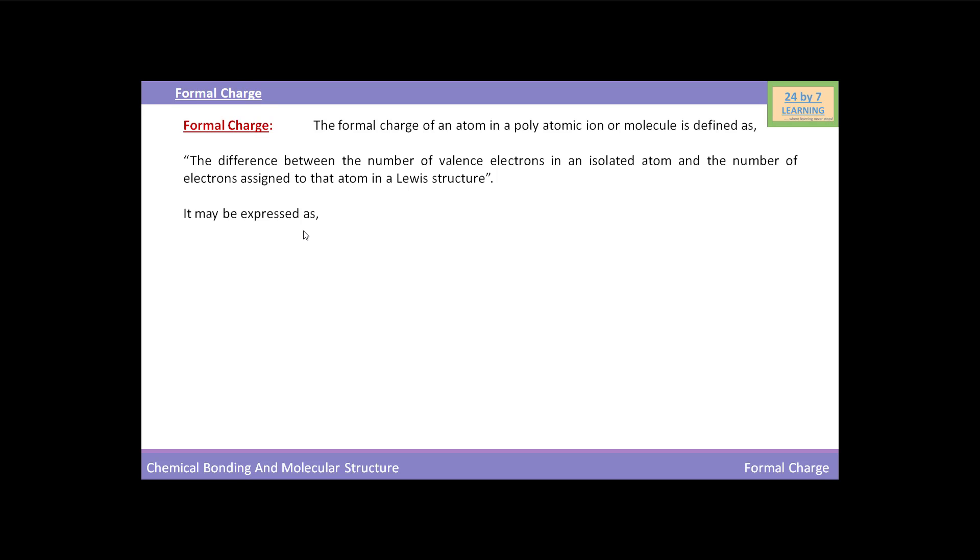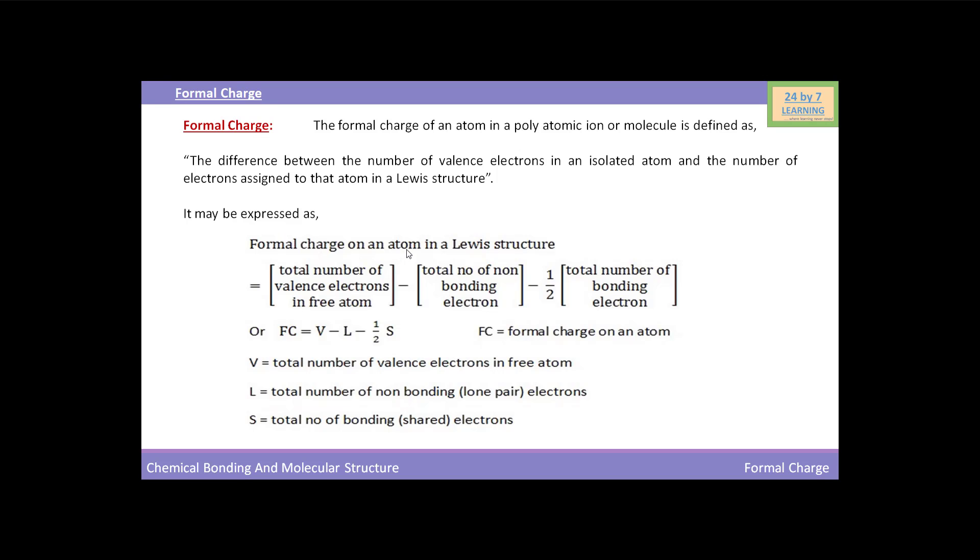It may be expressed as: Formal charge of an atom in a Lewis structure is given by total number of valency electrons in free atom minus total number of non-bonding electrons, or we can also say total number of lone pair electrons, minus 1/2 total number of bonding electrons or total number of shared electrons.